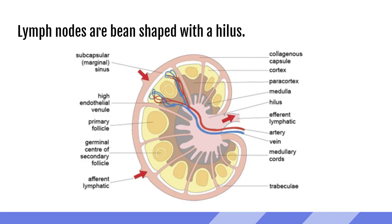Lymph nodes are surprisingly similar to very basic anatomy of the kidney. They are shaped like a bean and they have a hilum. At the hilum is an efferent lymphatic vessel and a small vein, both of which are exiting. There's also a small artery that's entering. On the periphery, afferent lymphatic vessels enter. The lymphatic vessels connect lymph nodes to one another, and these lymph channels are not really appreciated by ultrasound, but that small hilar vein and artery are.